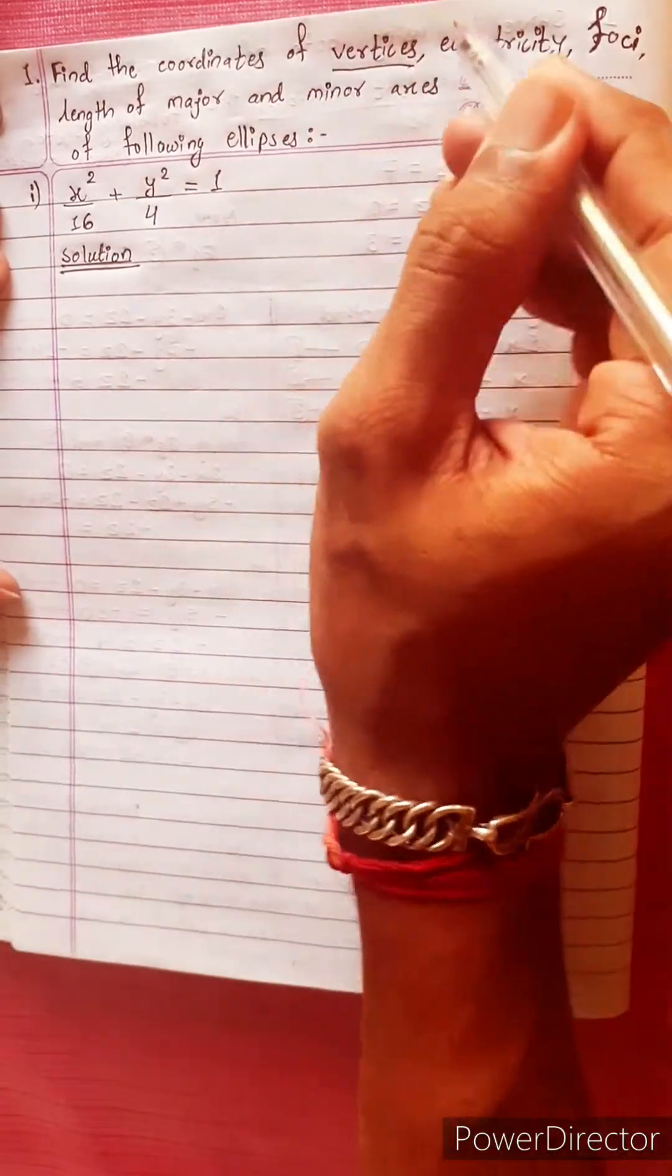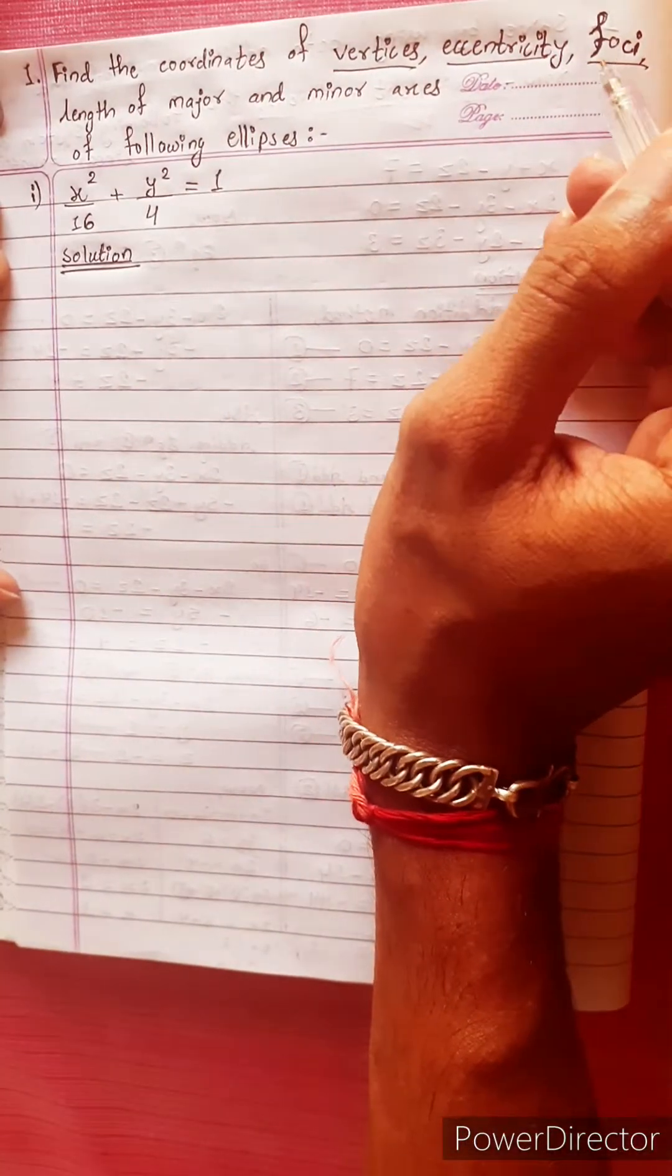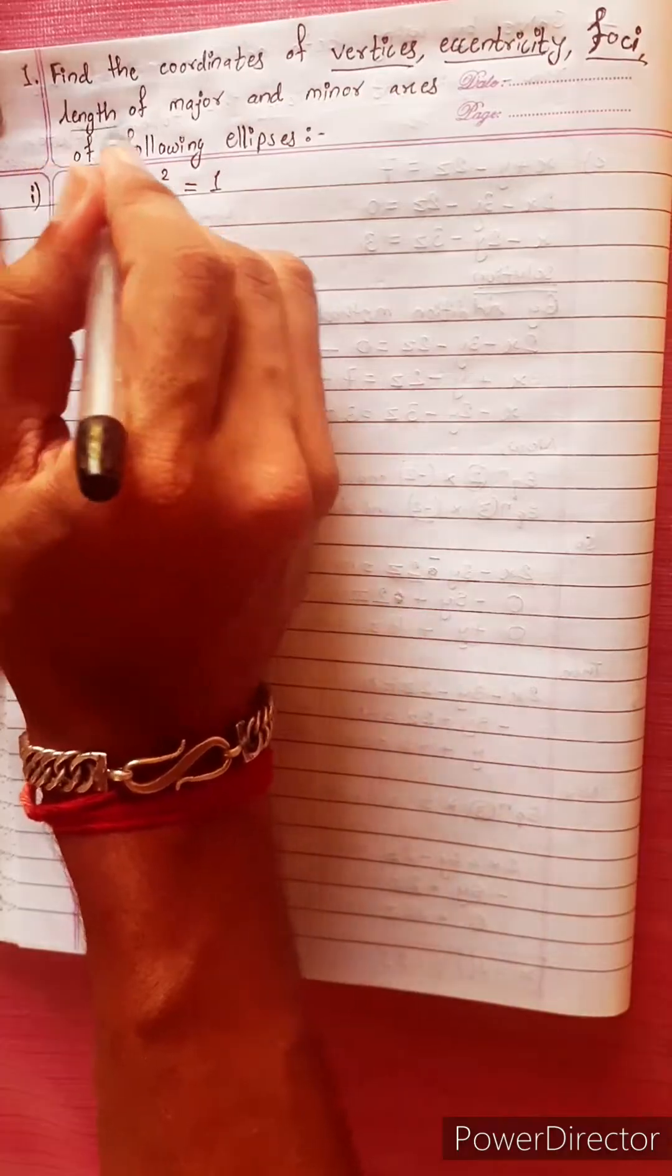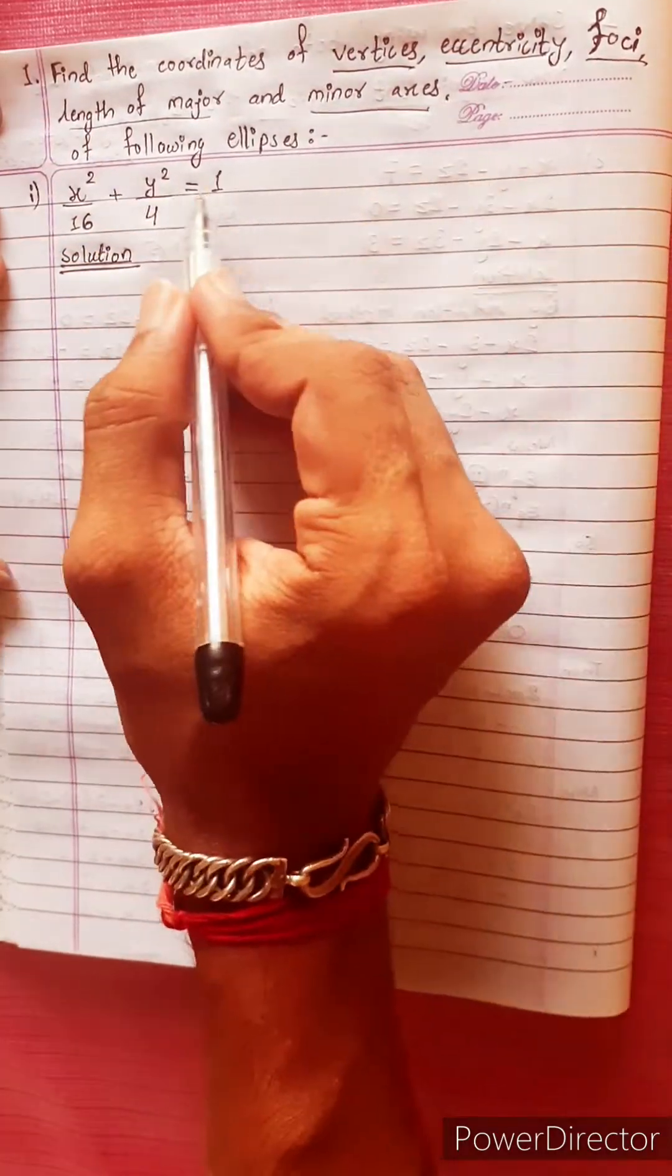I am going to show you the final coordinates of vertices, eccentricity, foci, and length of major and minor axes of the following ellipse.